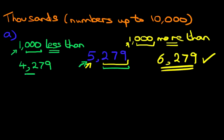So 1,000 less than 5,279 is 4,279. Nice and easy. Let's have a look at one more example.